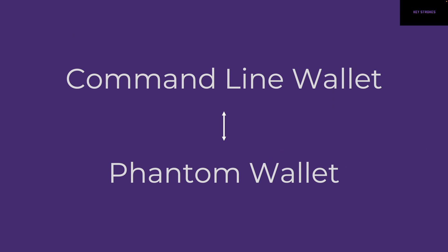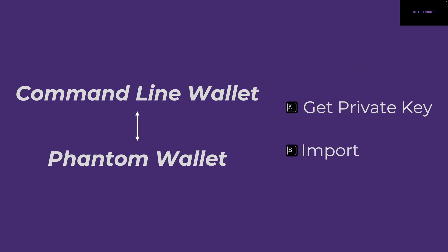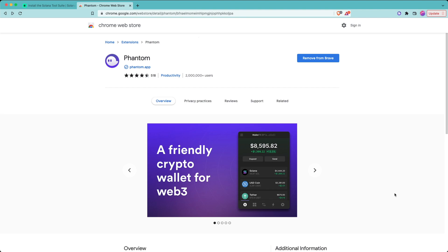Now we have one wallet in our file system and another wallet in our browser. What if we had to use them interchangeably? Like, if I can see my command line wallet in my browser, or if you have a Phantom wallet setup and you want to use it with command line tools for development — how do you do that? It's a pretty straightforward process: all you need to do is get the private key for whatever wallet you want to import and then just import it, and you're done.